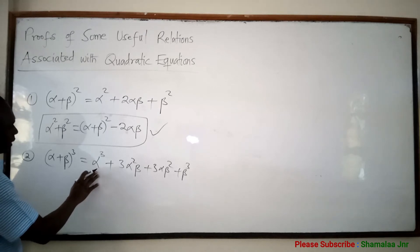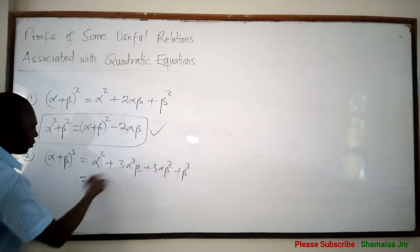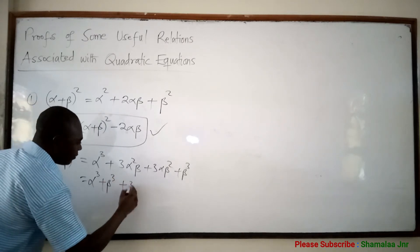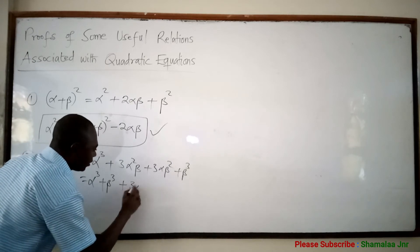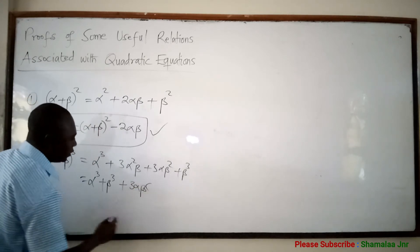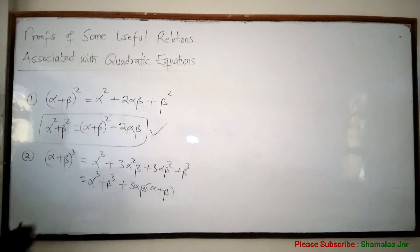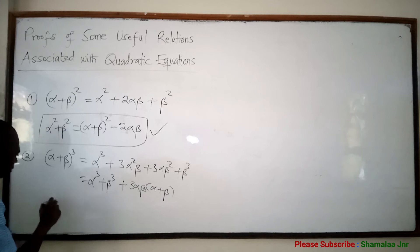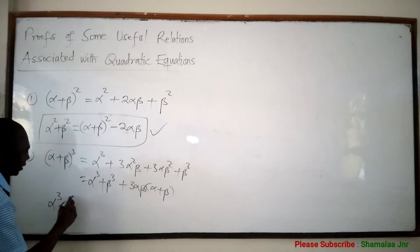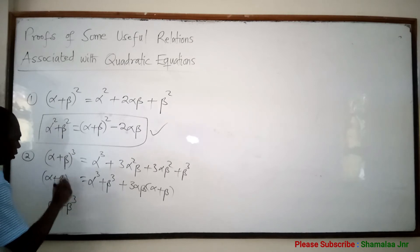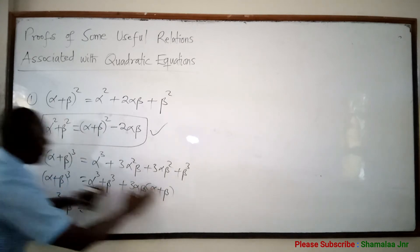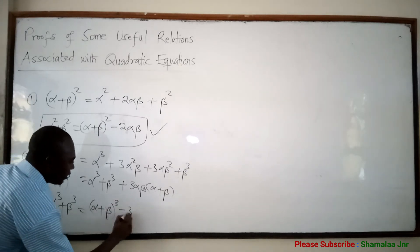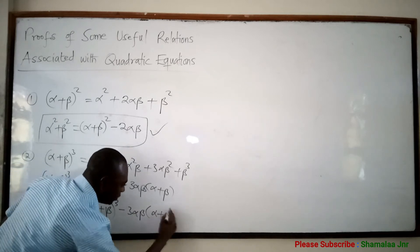Now, if you decide to make alpha cubed plus beta cubed the subject, you rearrange so that alpha cubed plus beta cubed equals alpha plus beta all cubed minus 3 alpha beta times the bracket alpha plus beta.